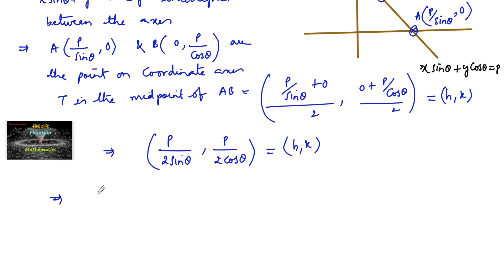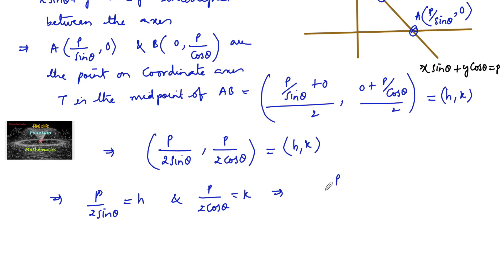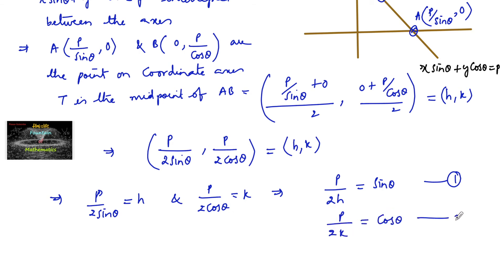Comparing with coordinates (h, k), we get p/(2sinθ) = h, so sinθ = p/(2h) — equation 1. And p/(2cosθ) = k, so cosθ = p/(2k) — equation 2. Now squaring and adding both equations.